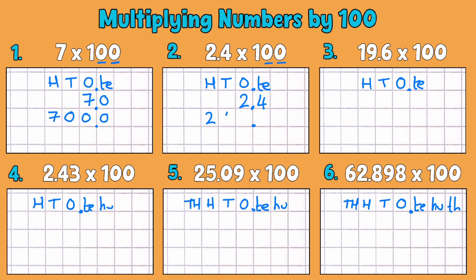And then I can put a placeholder in there to make 240 or 240.0. It's the exact same number because I've got no tenths with it.